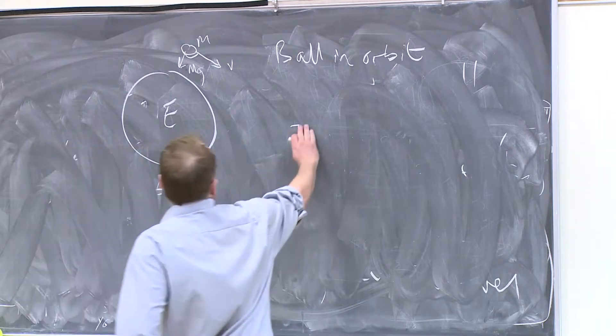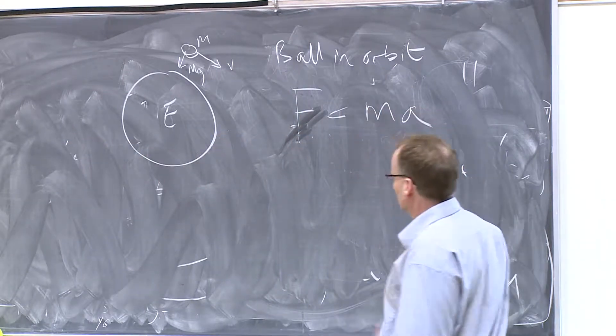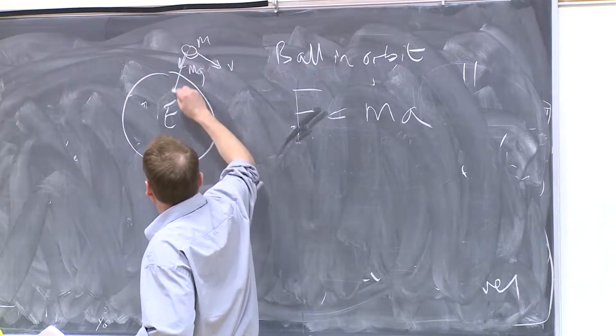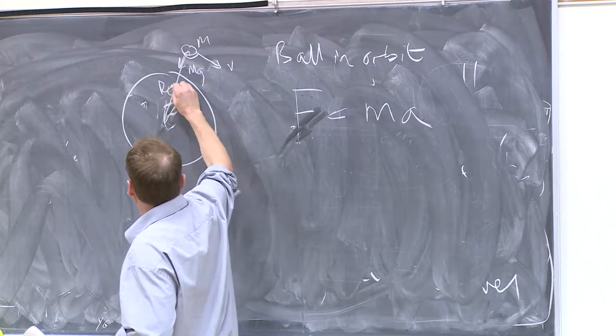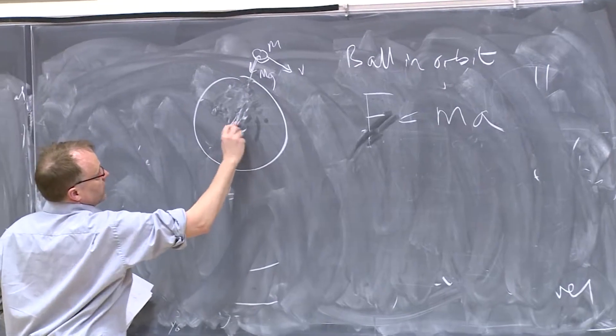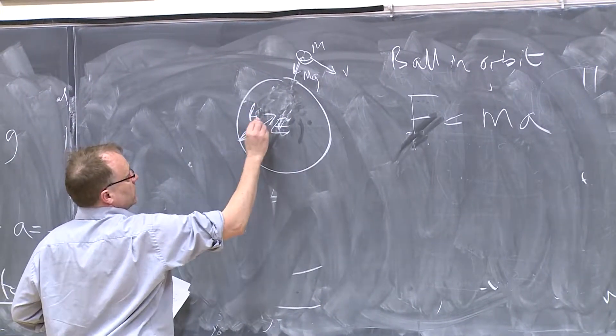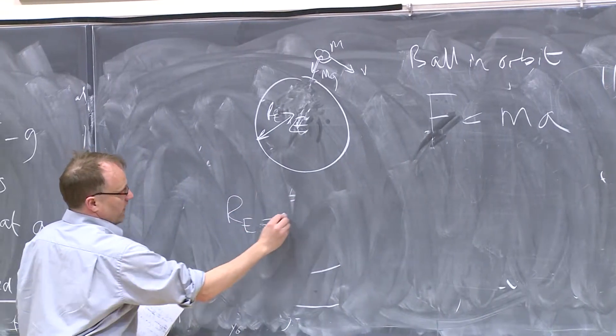So let's write F equals ma. If we're going to call this distance to the Earth, we're going to call that Re. So Re is the radius of the Earth.